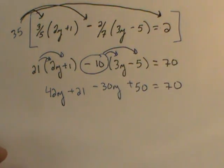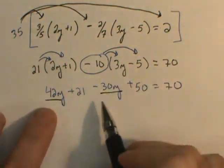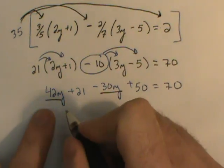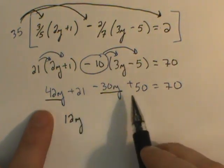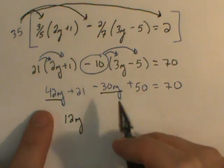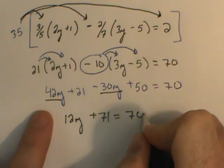We want to combine our like terms. So as we look at these y variables, we say 42y take away 30y is 12y. 21 plus 50, we're combining the constants, will be plus 71, equaling 70.